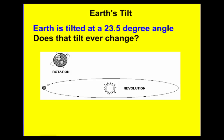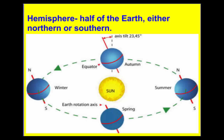Earth's axis has a tilt at a 23.5 degree angle, and that tilted axis is going to lead to something else. Next we need to talk about hemisphere — hemisphere just being half of the Earth, split up by our equator. So above the equator we have the northern hemisphere, and below the equator we have the southern hemisphere.